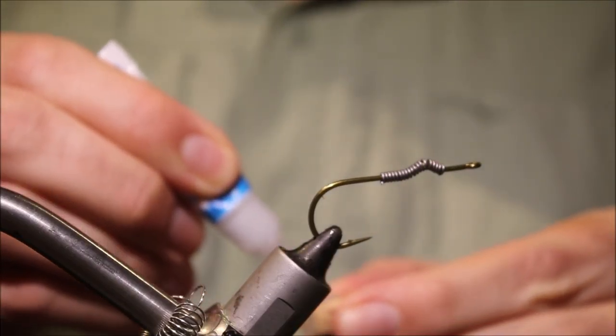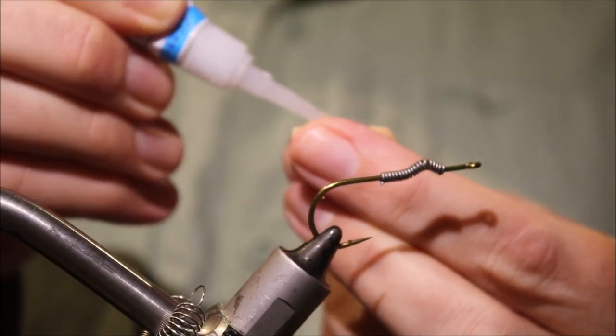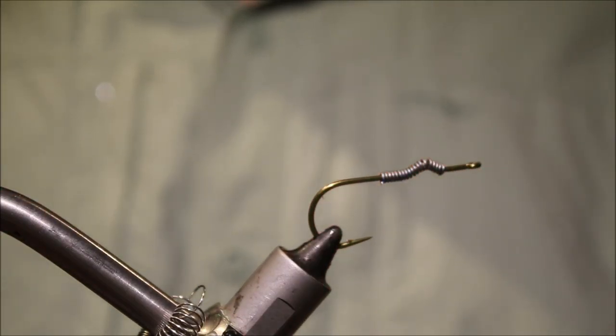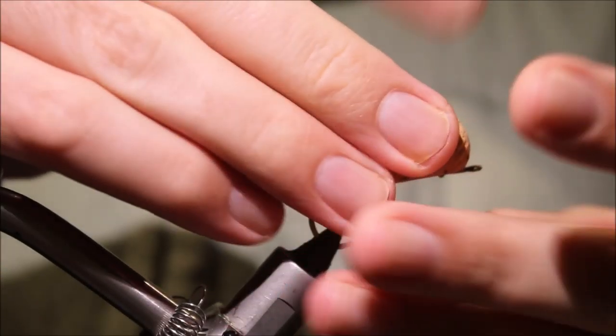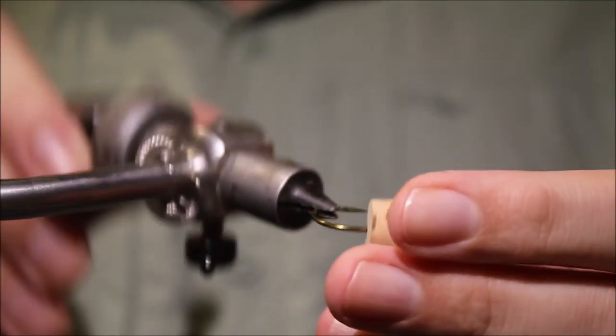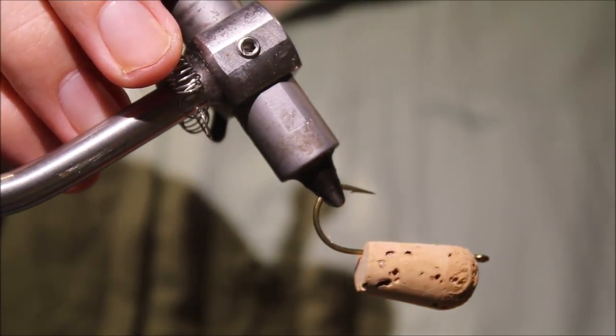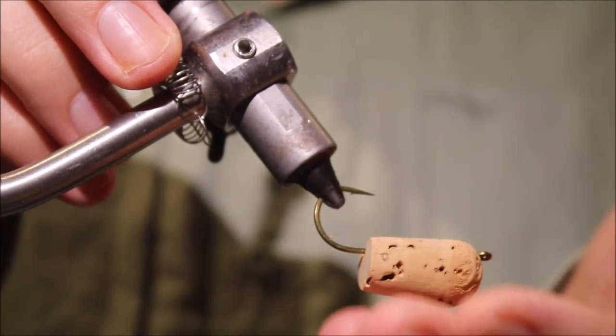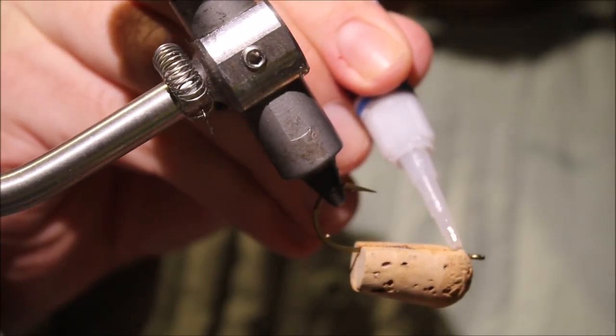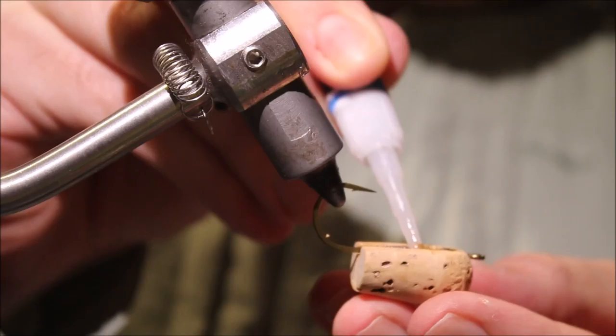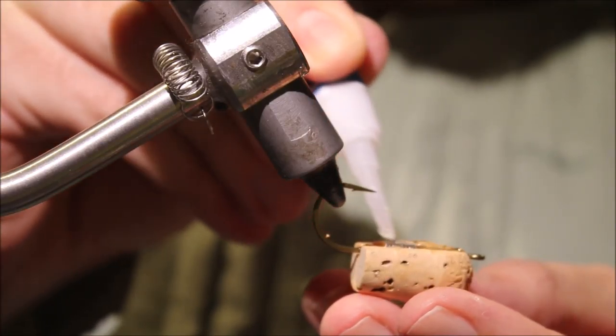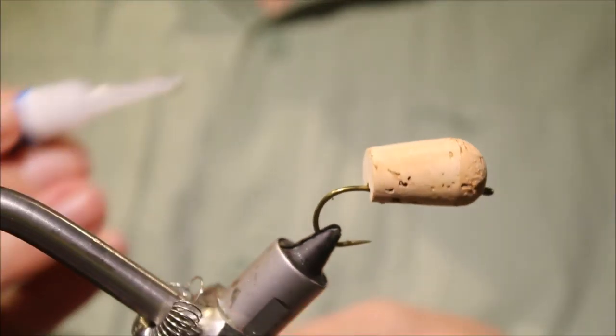So I've dry fitted it already, so I'm going to just get some gel type superglue, and fill my groove and my cork, and then I'll seat that body in there, and then I'll flood it with some more gel superglue, and I'll set that away to dry on my wheel.